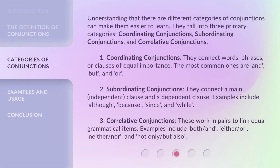Understanding that there are different categories of conjunctions can make them easier to learn. They fall into three primary categories: coordinating conjunctions, subordinating conjunctions, and correlative conjunctions.